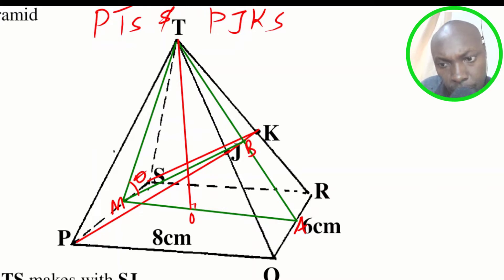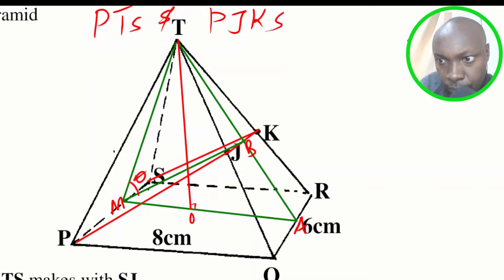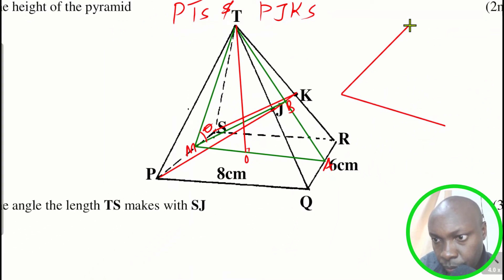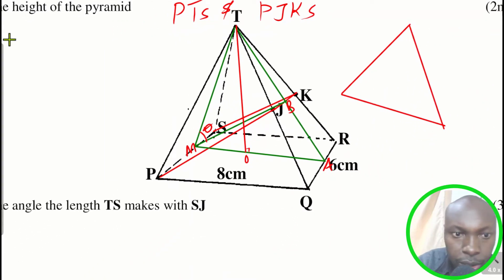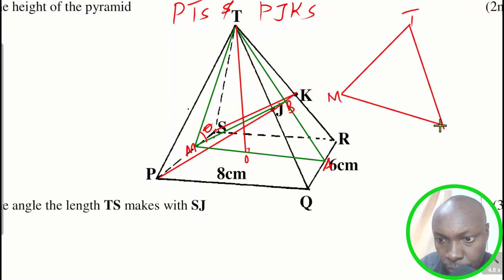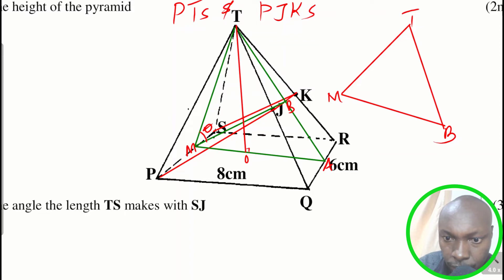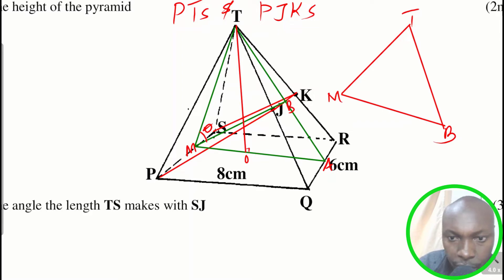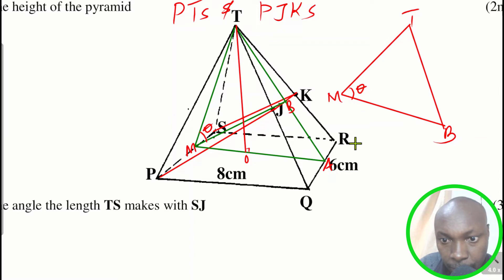Now, how do we get that angle? We extract triangle TMB, where B is the midpoint of JK. The required angle is the angle at that vertex in triangle TMB. We start by finding the length TM.